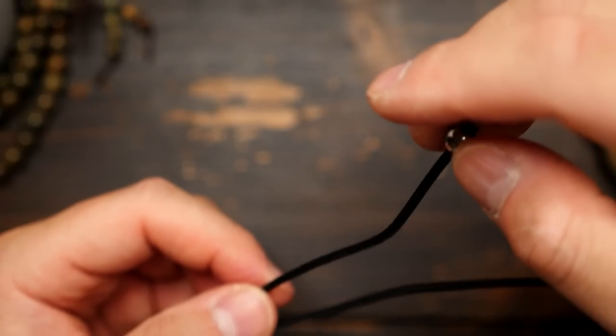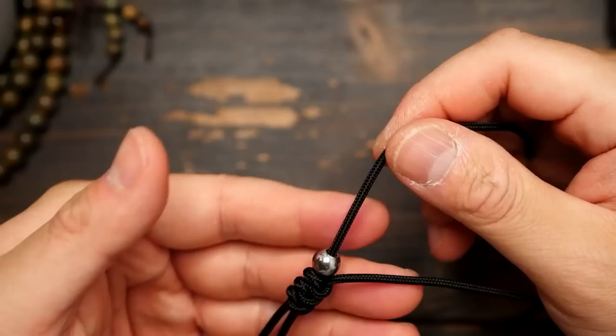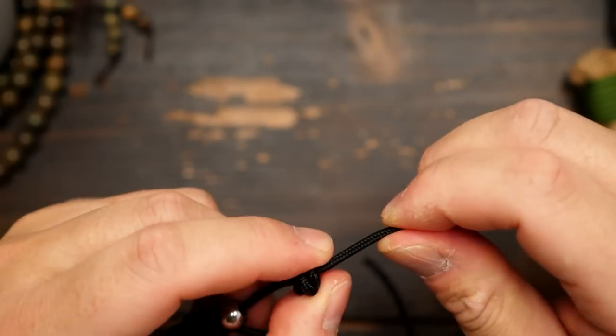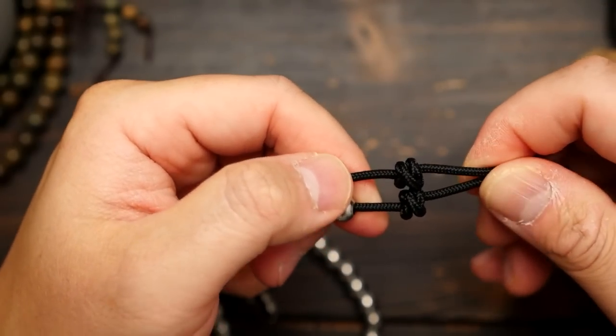Then on one tail end, place another bead onto the end. And then from there, tie a double overhand knot. Do the same on the other tail end.